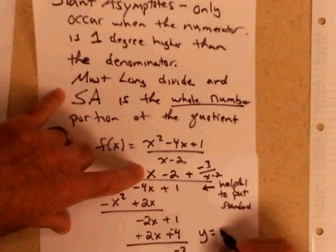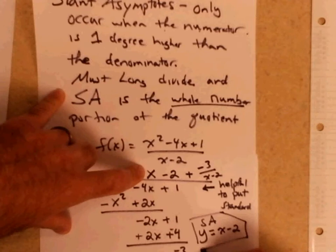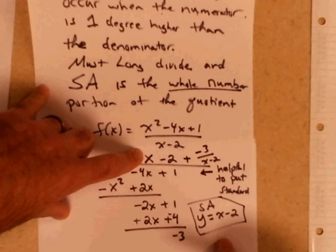The slant asymptote is the whole number portion, which is just x minus 2. So you have a slant asymptote at y equals x minus 2. An asymptote is a line, and that creates a line that the graph will drift towards the further you go out towards infinity.